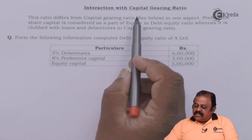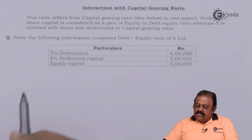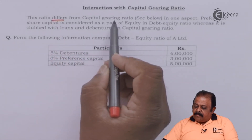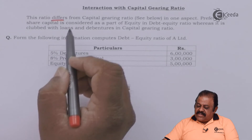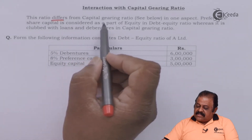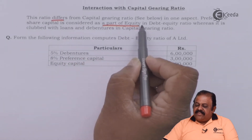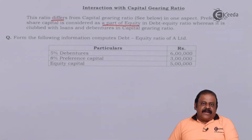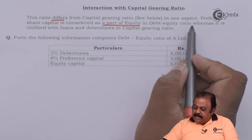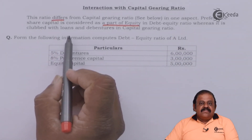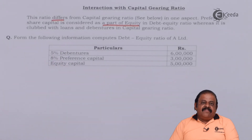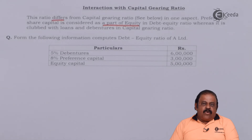Interaction with the capital gearing ratio: this ratio differs from the capital gearing ratio in one aspect — preference share capital is considered as part of equity, that is part of proprietors' fund, in the debt equity ratio. Whereas in the capital gearing ratio, preference share capital is added with long-term borrowed funds.